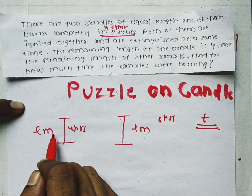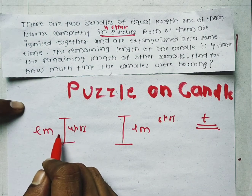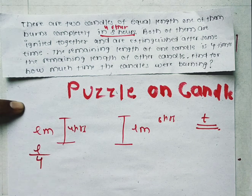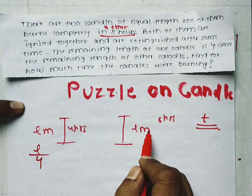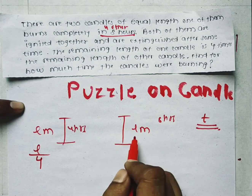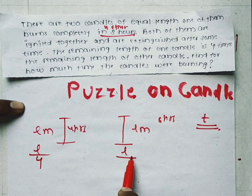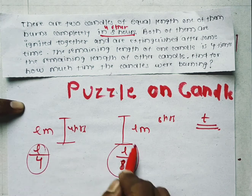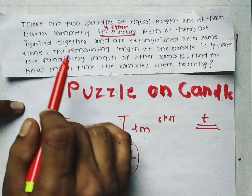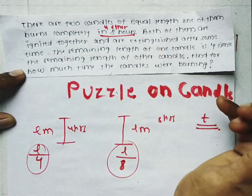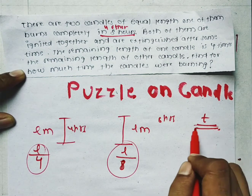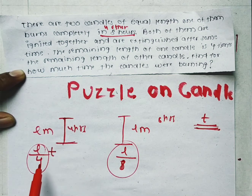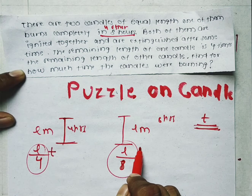Since this candle takes 4 hours to burn completely, in 1 hour it will burn L/4. Since the other candle takes 8 hours to burn completely, in 1 hour it will burn L/8. Since both are ignited at the same time and extinguished after T time, this candle would have burned L/4·T and the other candle would have burned L/8·T.